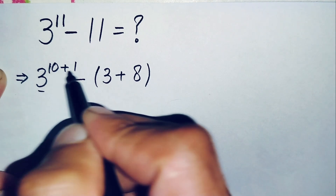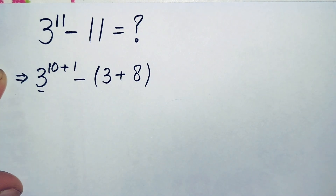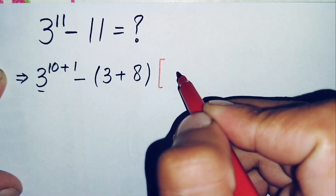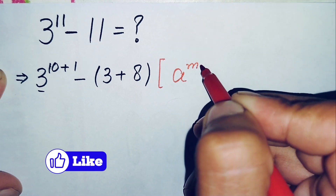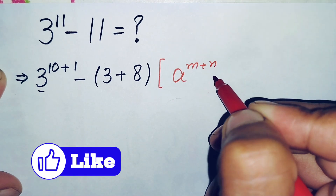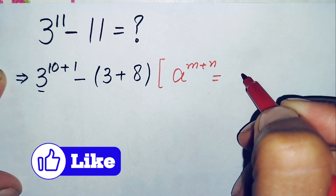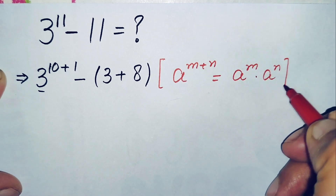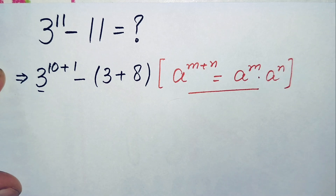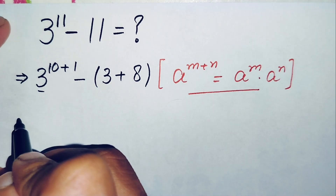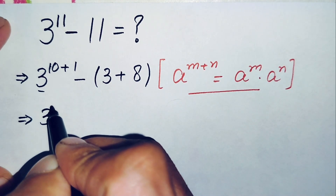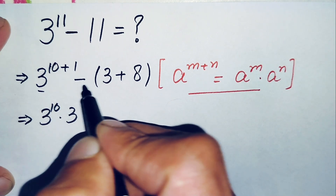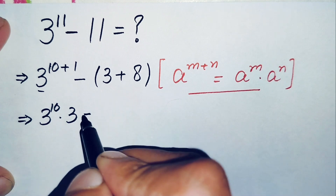Here we will use the exponent math property: a^(m+n) = a^m × a^n. Using this property, this equation will become 3^10 × 3^1, which is simply 3. And here we will multiply the negative sign inside the parenthesis, so this will become minus 3 minus 8.